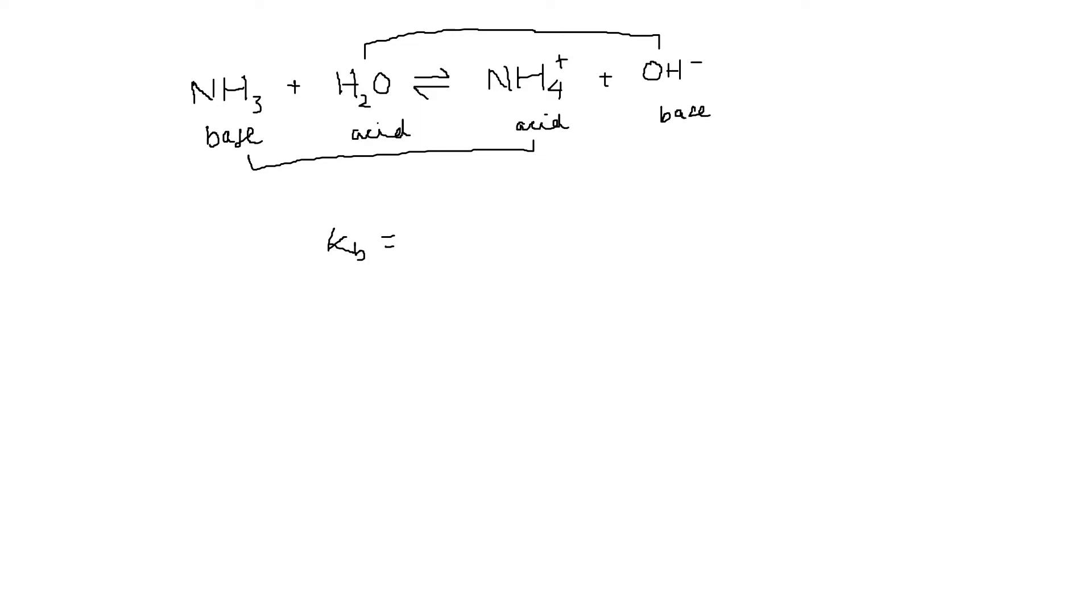We write that Kb is equal to the concentration of the ammonium ion NH4+ multiplied by the concentration of the hydroxide ion, divided by the concentration of ammonia NH3. Here we can ignore water on the left side of the equation for the reasons we give in the chapter.